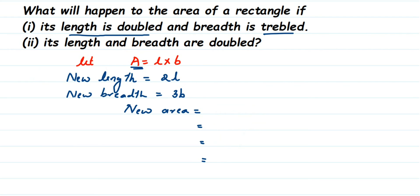In the second question, they are changing both length and breadth. Length and breadth are both doubled — doubled means two times. So new length will be 2l and new breadth will be 2b. The new area will again use the area formula: length into breadth.